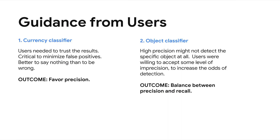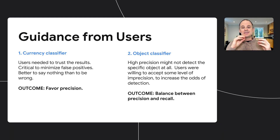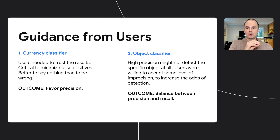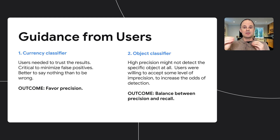With that in mind, what did users tell us? For currency, it was fairly intuitive — they said, 'Never confuse a $1 bill for a $100 bill. Don't guess; if you're not certain, say nothing.' So this is a pretty clear signal for precision. The easy thing to do is take that lesson and carry it over to objects, but there's some nuance. Imagine we have an object that could be an armchair or a couch — if we're very high precision, we may say neither because we're not sure.